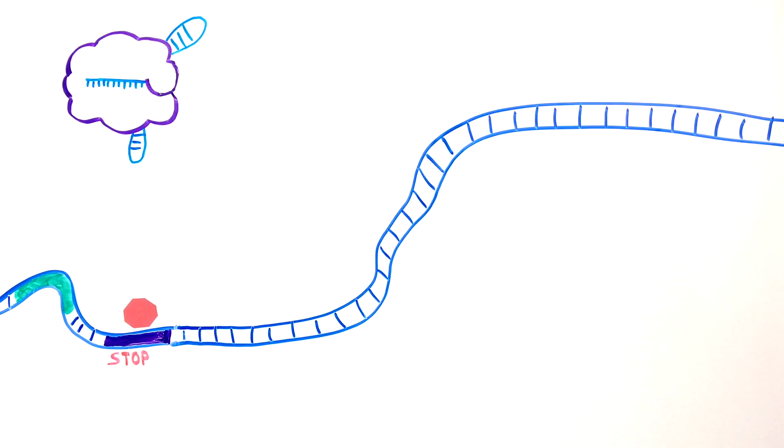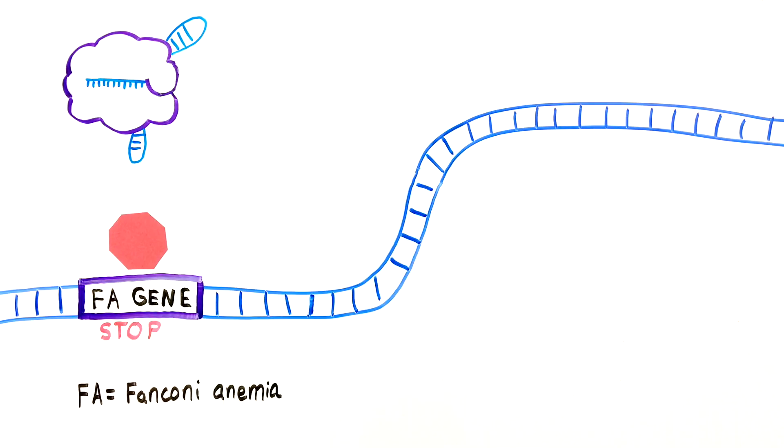Richardson observed that when he turned off genes involved in the Fanconi anemia pathway, the cell was unable to repair the Cas9 break using single-stranded DNA.